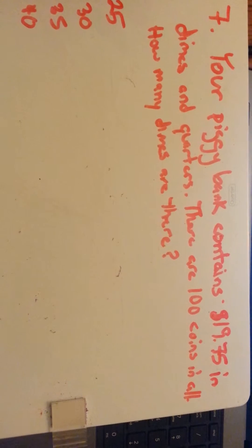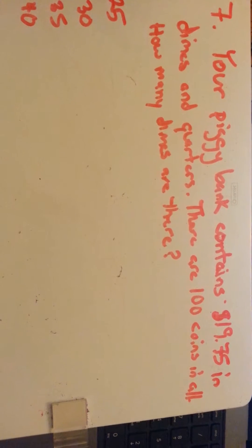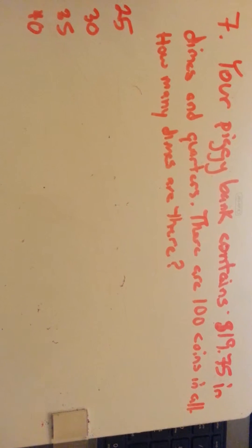Your piggy bank contains $19.75 in dimes and quarters. There are 100 coins in all. How many dimes are there?